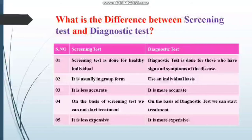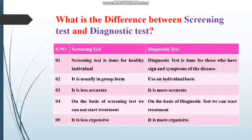Is liye jo screening test hai yeh less accurate hai, lekin diagnostic test is more accurate as compared to screening test. Screening test ke basis pe hum koi bhi medicine start nahi kar sakti — agar HIV, HBS, ya HCV ka test ICT technique pe reactive bhi ho, toh bhi koi medicine nahi dete, even ELISA pe bhi treatment nahi dete. Kyunke us ke liye specific aur accurate test PCR hai — quantitative aur qualitative. Diagnostic test ke basis pe treatment start kar sakte hain.